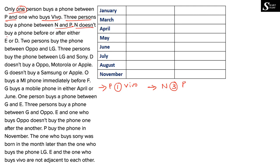N doesn't buy a phone before or after either E or D — N should not come immediately before or after E or D. Next, 2 persons buy the phone between Oppo and LG — there must be a gap of 2 persons between Oppo and LG, but we don't know their positions. Also, 3 persons buy the phone between LG and Sony — there must be a gap of 3 persons between LG and Sony, so we keep this on hold.